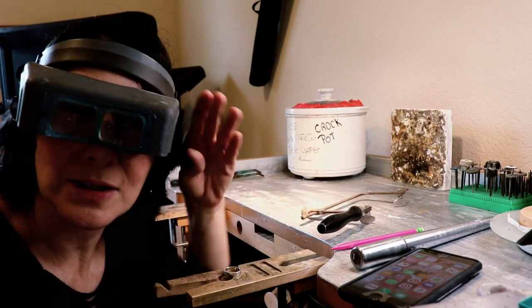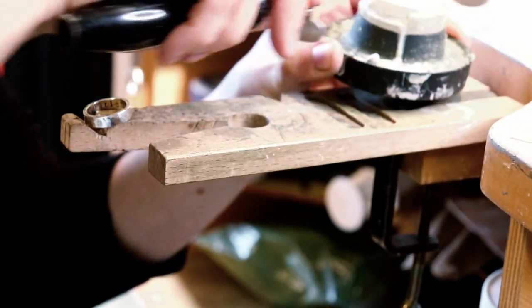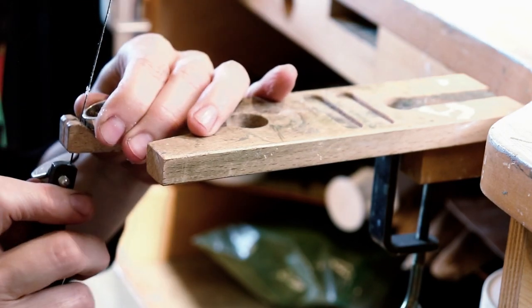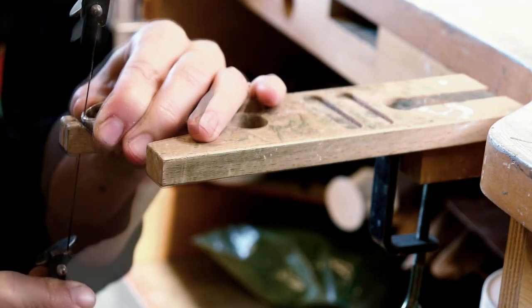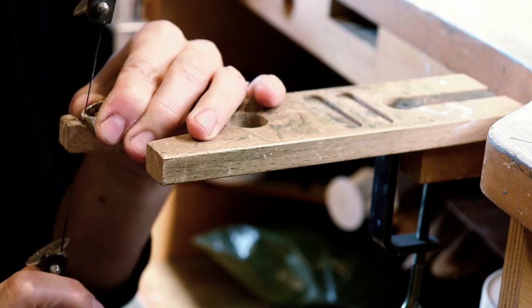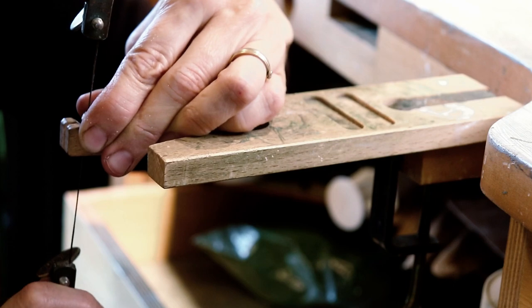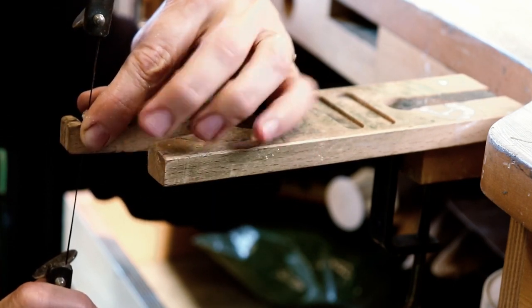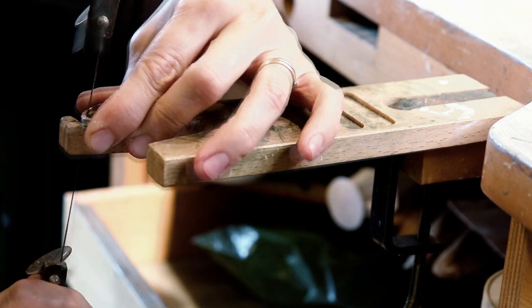These look so awesome. A little jewelers wax on my blade so it slides through. Up and down perpendicular strokes with the saw blade. I'm making sure to keep my hand out of the way so when that saw blade pops through the metal I don't saw into my hand.